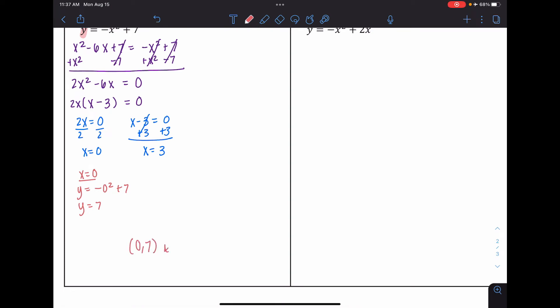Now I need to find it for when x equals 3. So when x equals 3, I have y equals negative 3 squared plus 7. 3 squared is 9, so I have negative 9 plus 7. So that means that y is equal to negative 2. And so my second coordinate is going to be 3, negative 2.